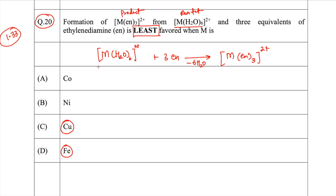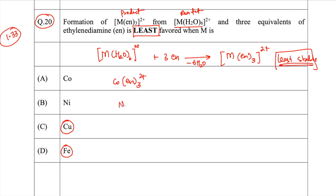"Least favored" means this reaction is not happening — or more precisely, the product is least stable. So you have to look at the stability of the product for each metal ion. With cobalt you get [Co(en)₃]²⁺, with nickel you get [Ni(en)₃]²⁺, with copper you get [Cu(en)₃]²⁺, and with iron you get [Fe(en)₃]²⁺.